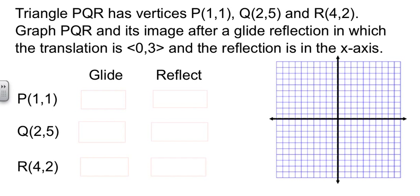So we have a triangle, PQR, that has certain vertices, and we know how to plot those. 1, 1... 2, 5... And 4, 2. So we have our original triangle. Connect, connect, connect, connect.